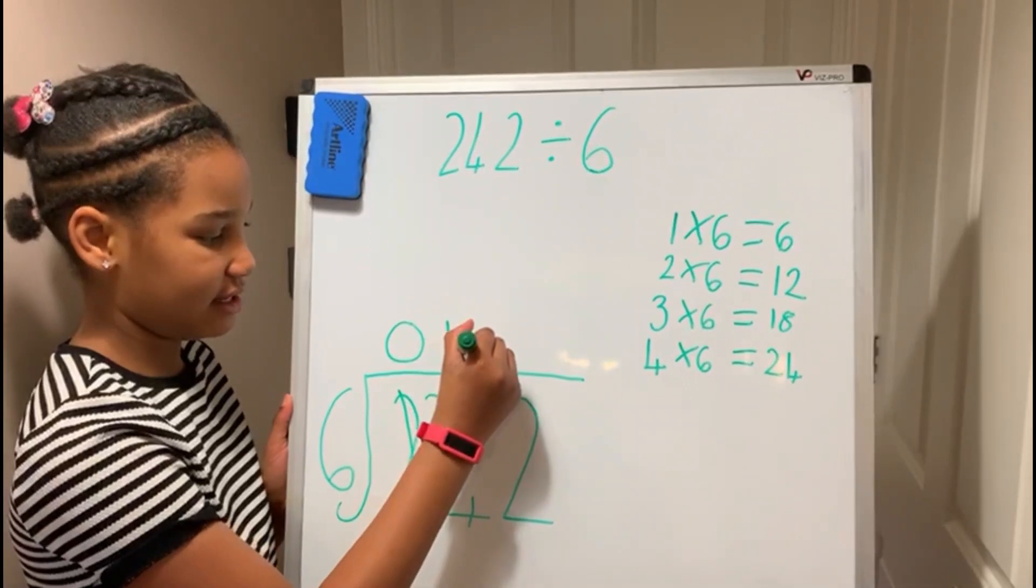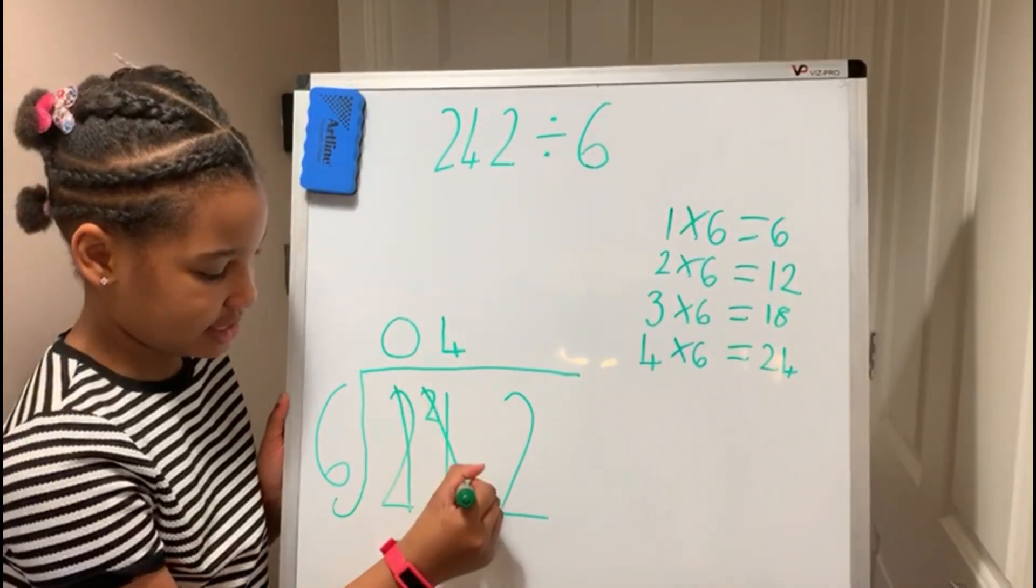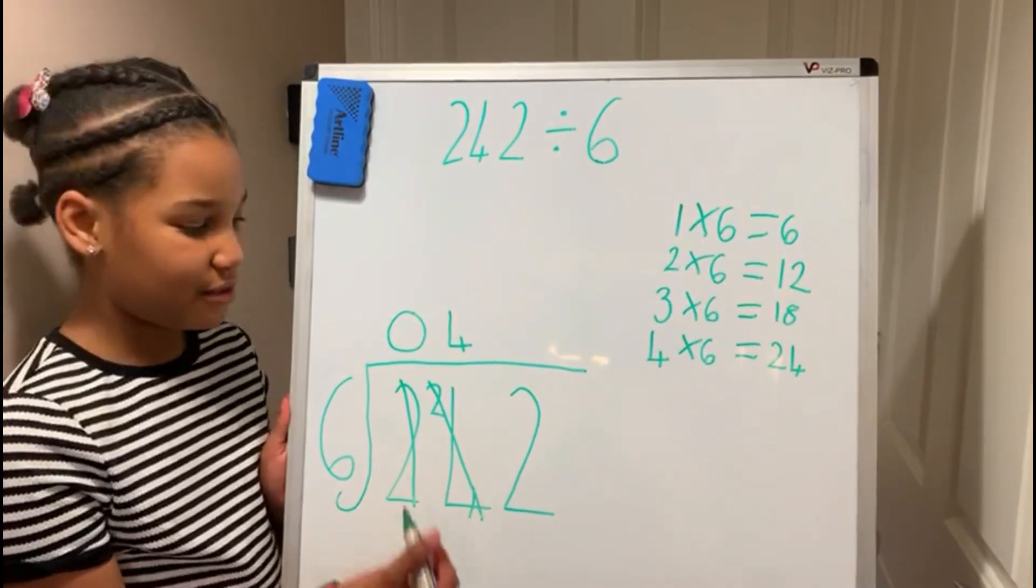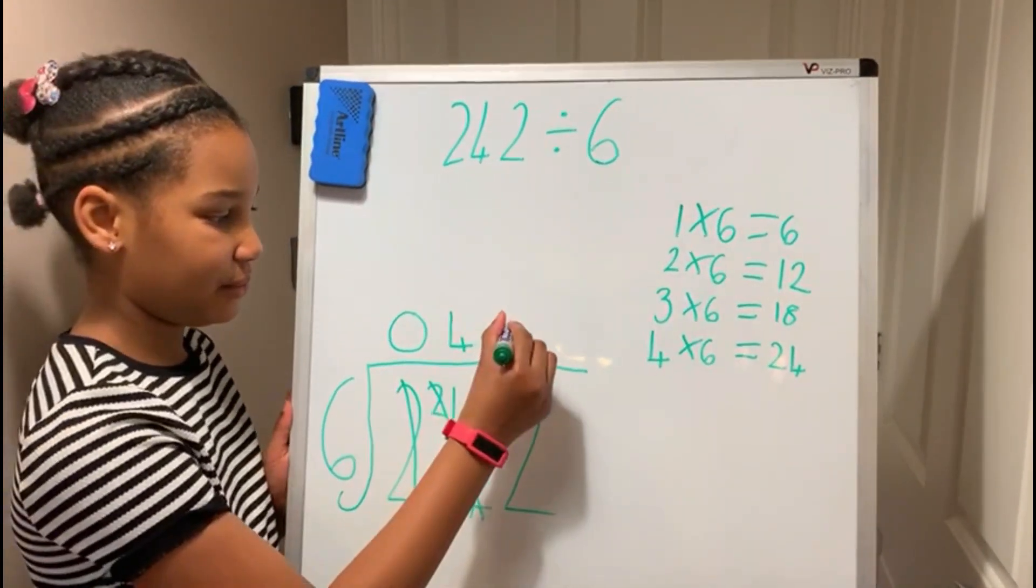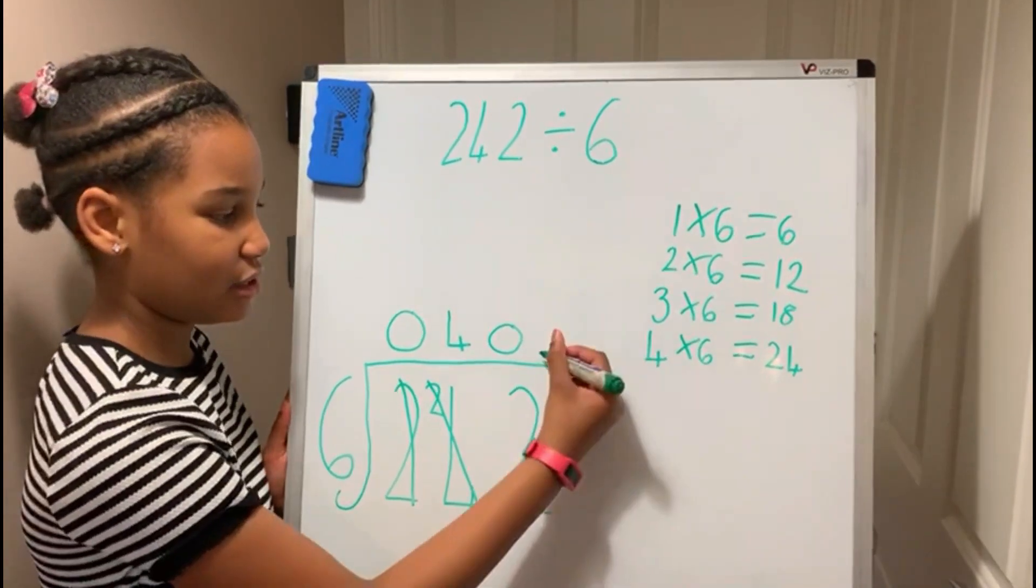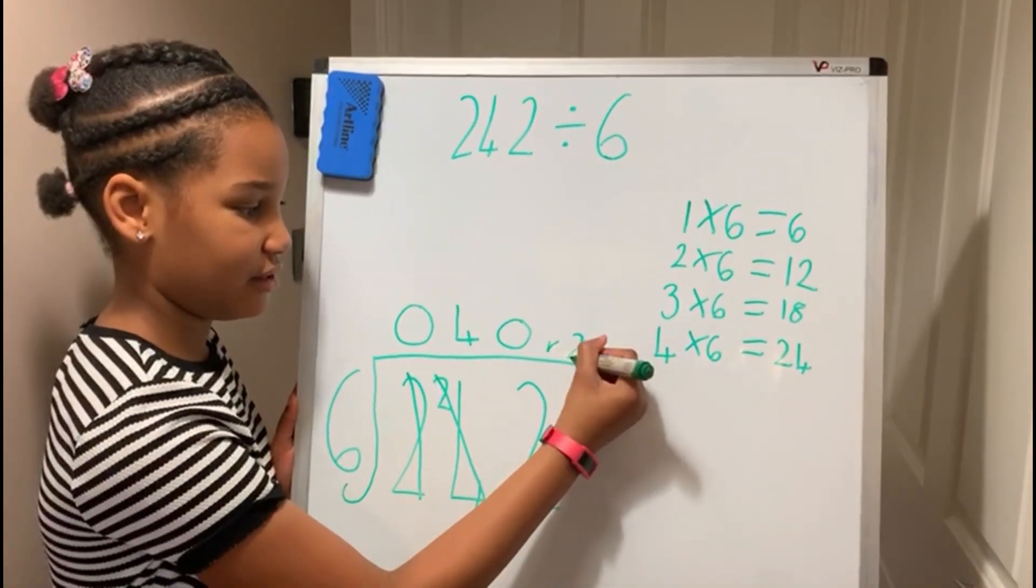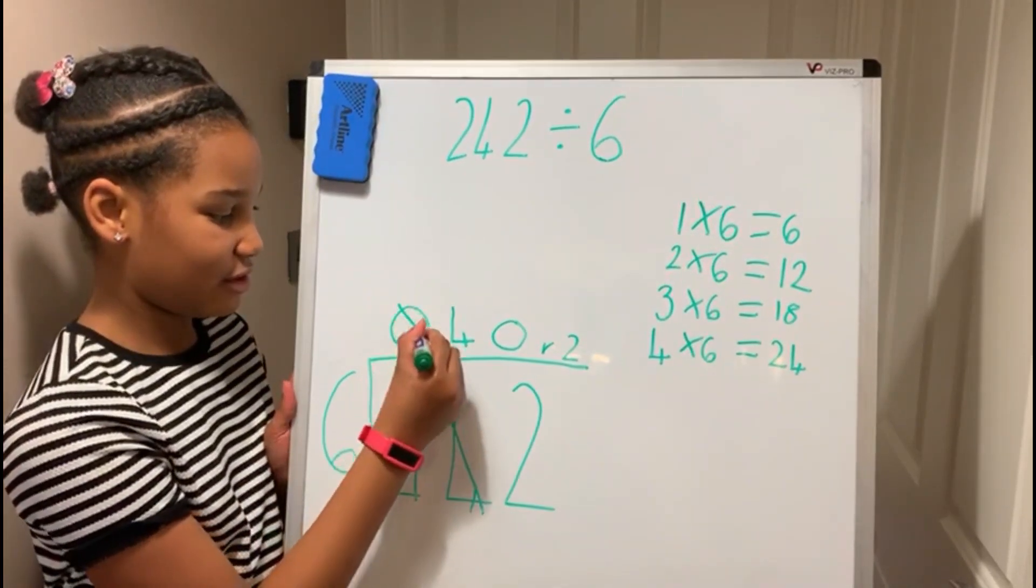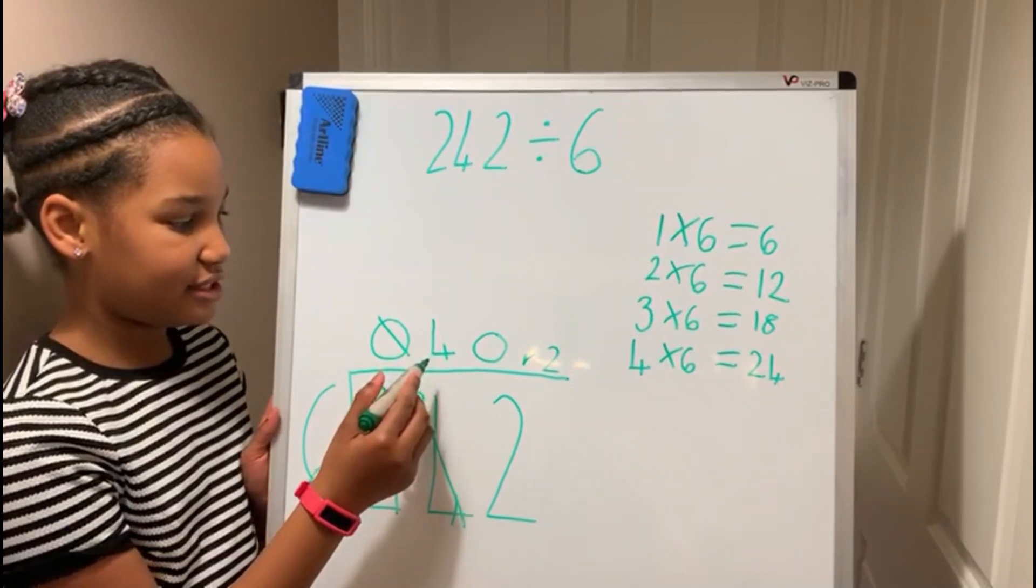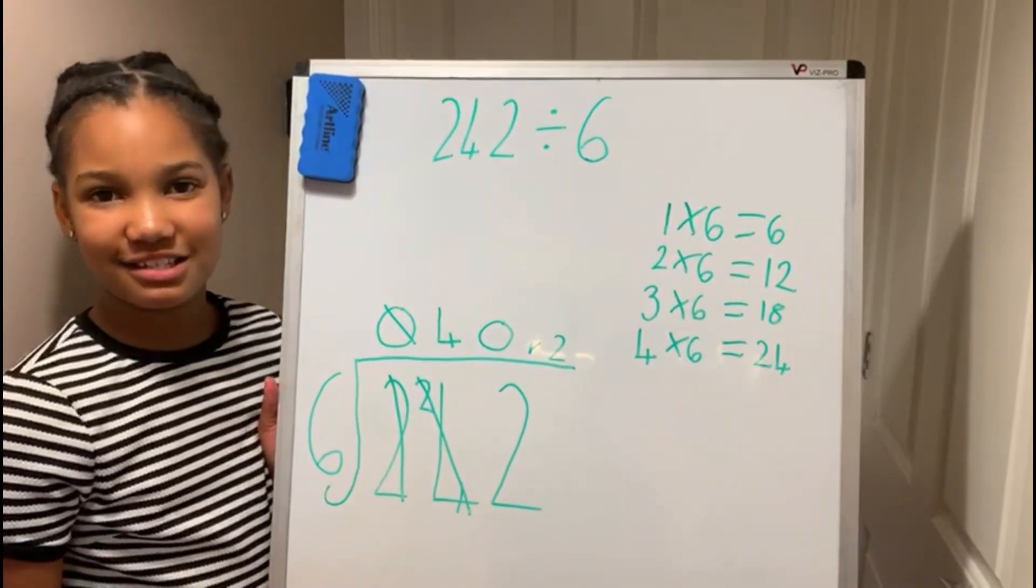And cross out the 24. How many 6's go into 2? 0. You cross out the 0 because you don't really need it when it's at the start. So the answer is 40 remainder 2.